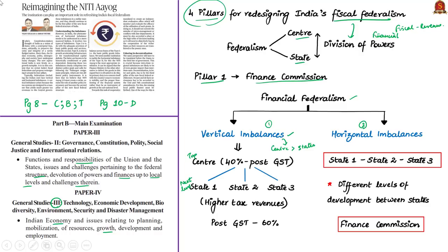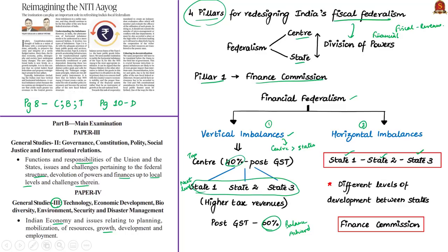The constitution mandates relatively greater responsibilities to state governments compared to the central government. Post introduction of GST, the share of states in public expenditure is 60%, while it is 40% for the center. So some balance has been achieved with the introduction of GST. Horizontal imbalance means the imbalance between different state governments in India — even though money shared may be the same, some states face more challenges because of population differences and different levels of development. The Finance Commission has traditionally dealt with these imbalances very well, so the authors propose it should continue as the first pillar of the new fiscal federal structure.